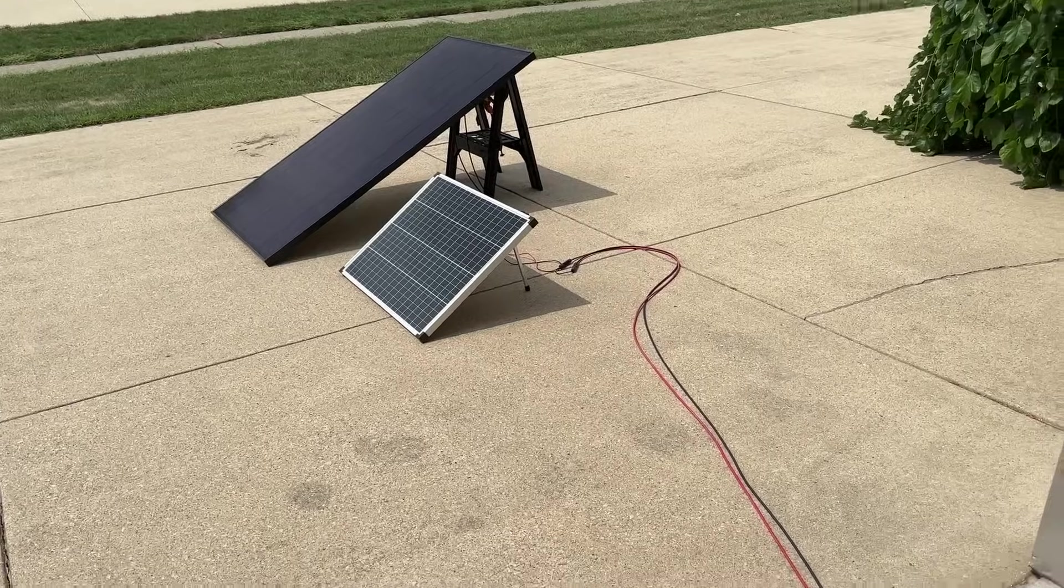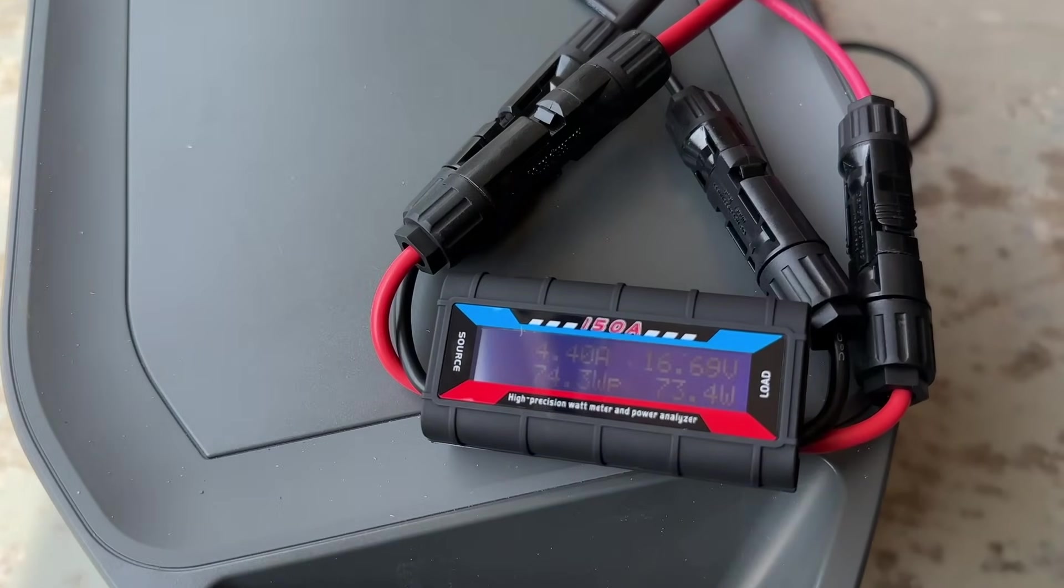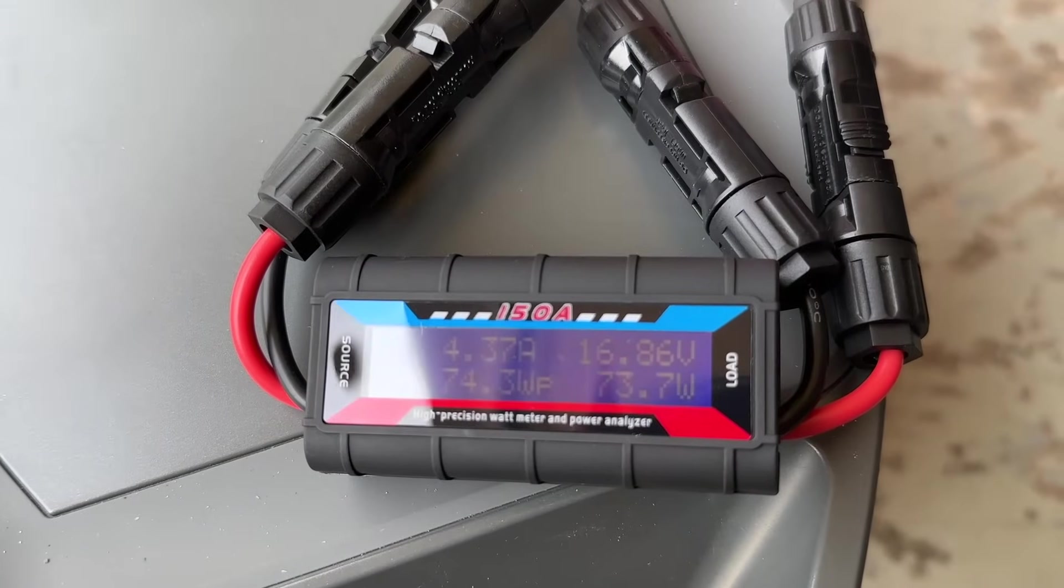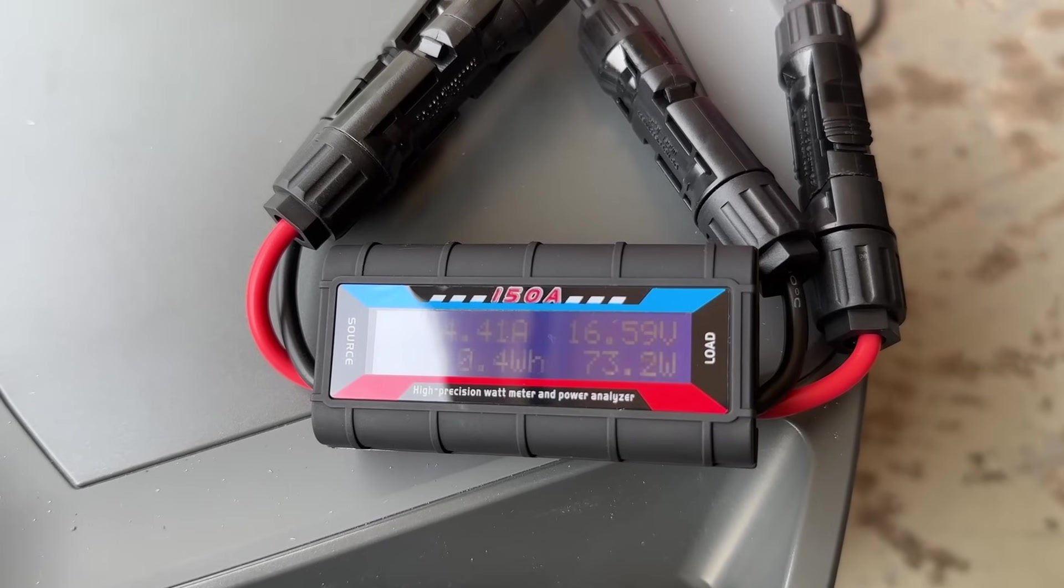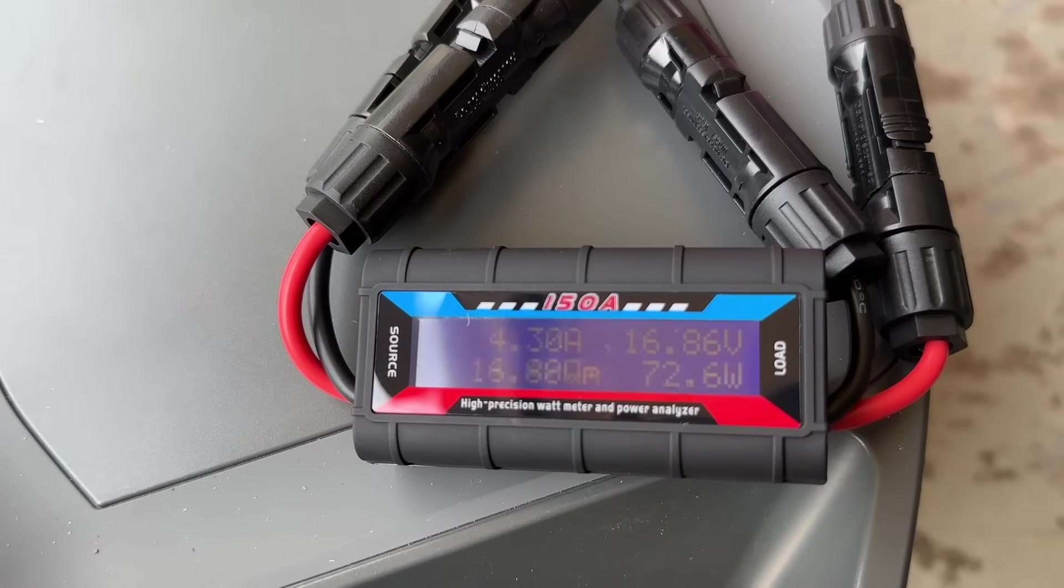Then if we plug in the Thunderbolt 100 watt, take a look at our power analyzer: right about 74 watts and that's a combination of 16 and a half volts and about 4.4 amps.